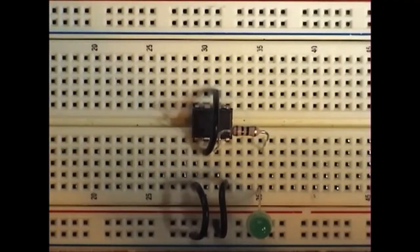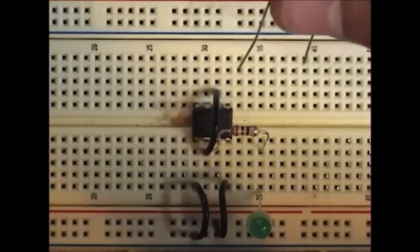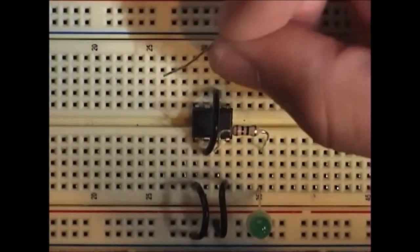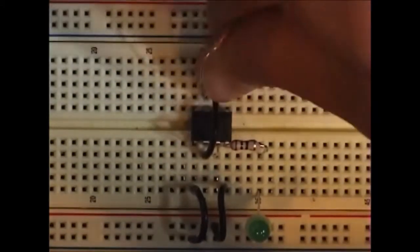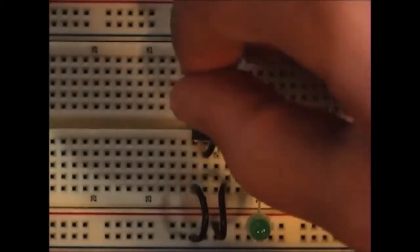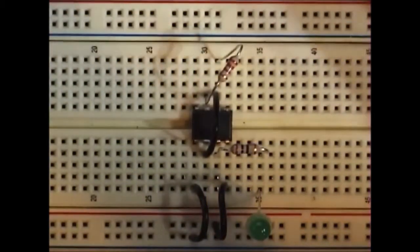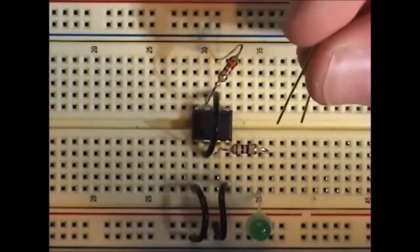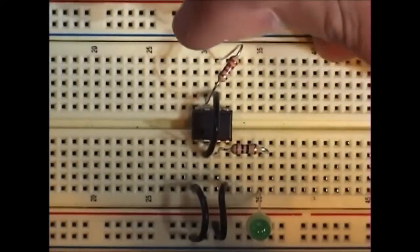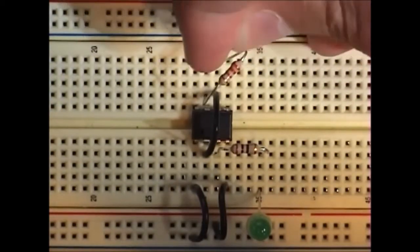Pin 6, you connect with the resistor to pin 7. Pin 7, you connect with the resistor to positive.